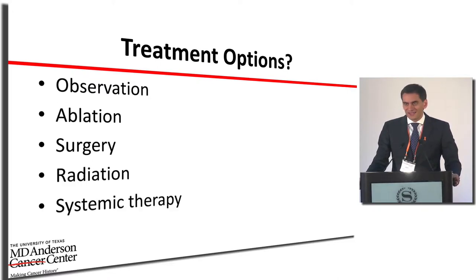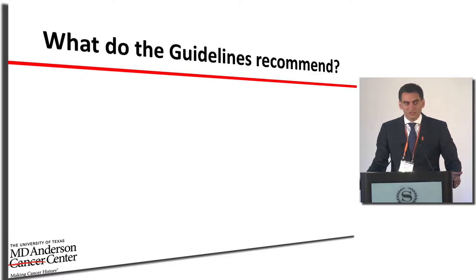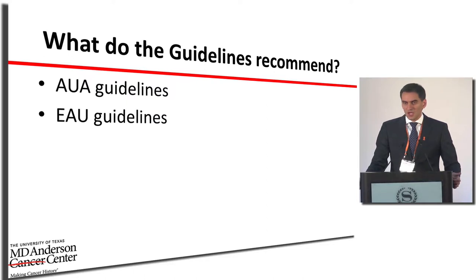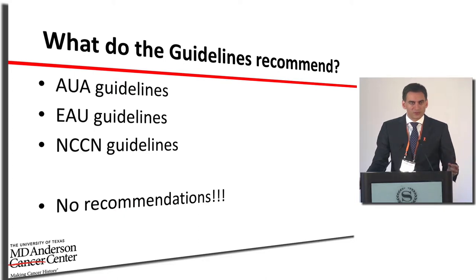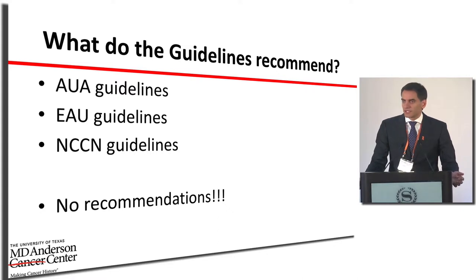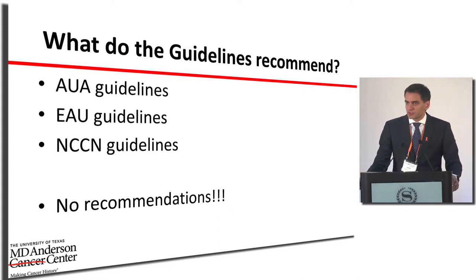Looking at the guidelines — the American Neurological Association, European, and National Comprehensive Cancer Network guidelines — none of them really tell us what we should do when we find an isolated local recurrence. The reason is it's quite rare and there aren't large studies to guide us, so it requires a very individualized approach with each patient.